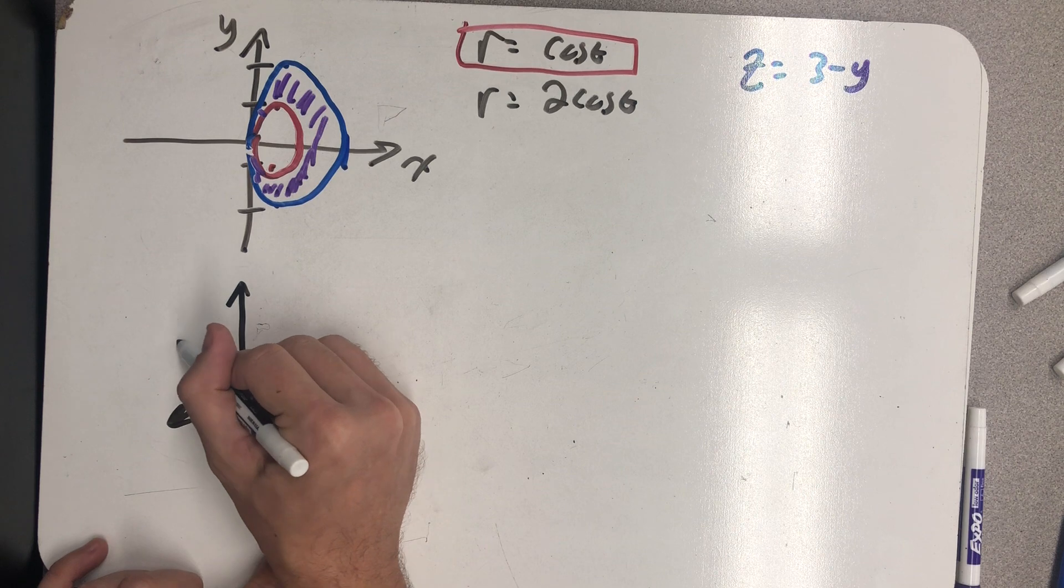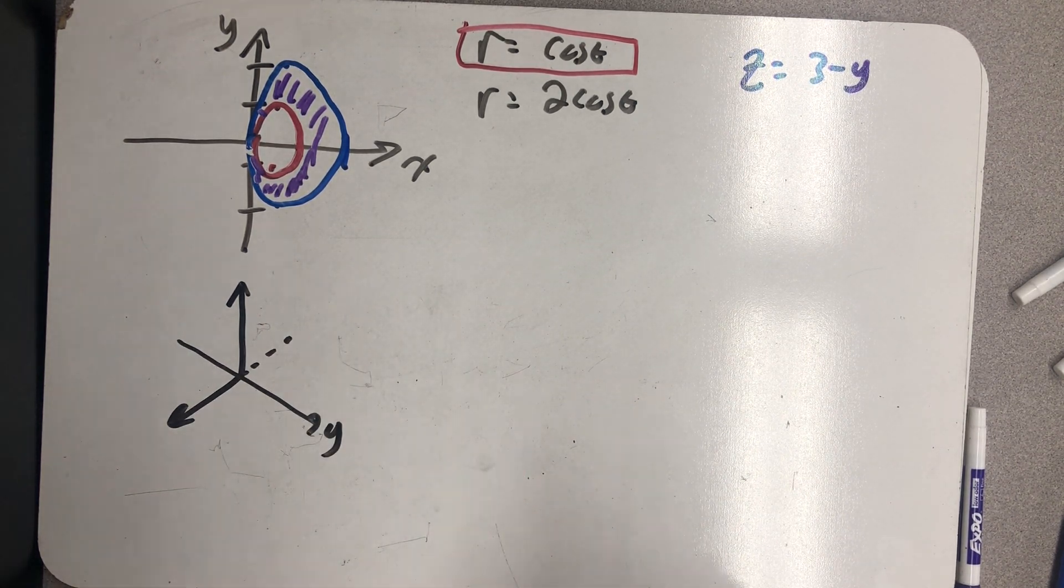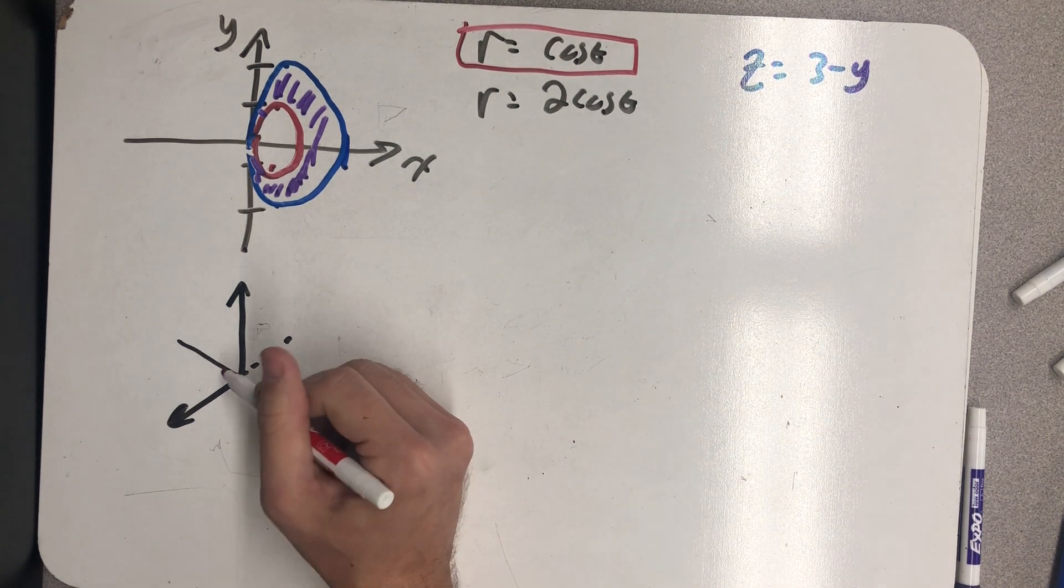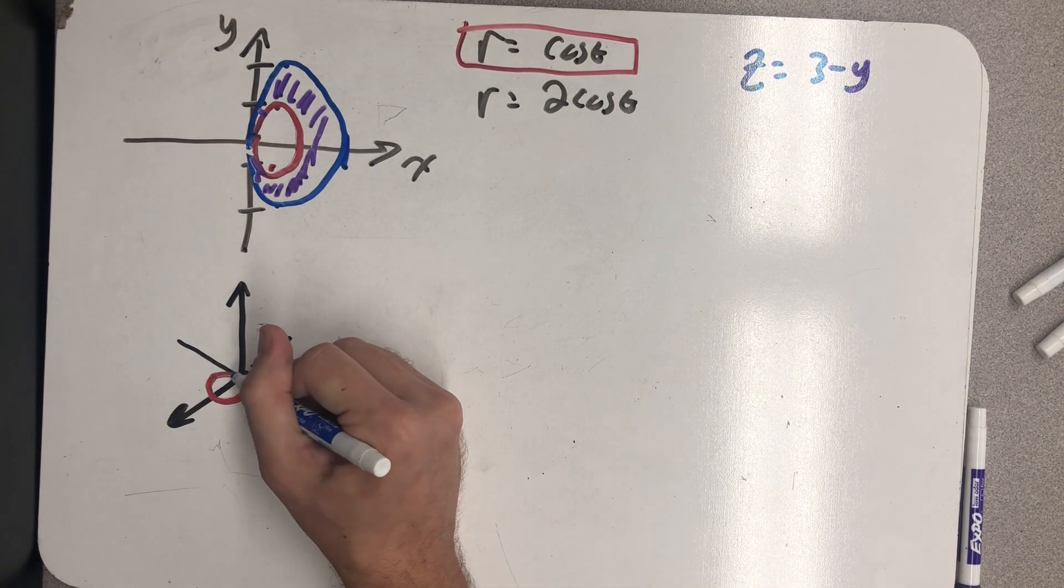So there's my x-axis on both sides of the y-axis. Not to the best scale, but I have a little red circle. I have a little blue circle.